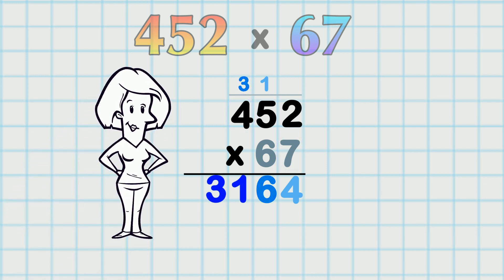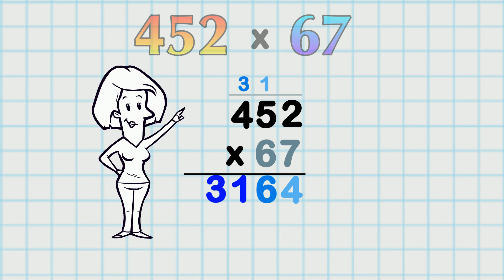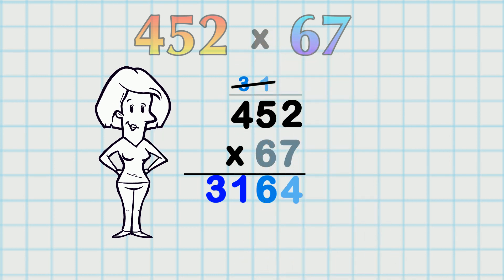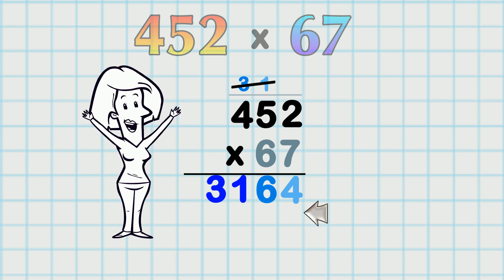Before I start the next line of multiplication, I cross out those digits we carried or regrouped before. We've added them once. We do not want to accidentally add them a second time. And now I'm ready for the next line.